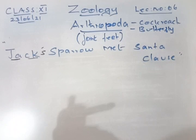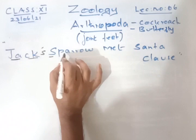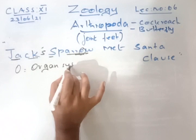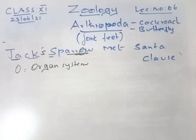Moving to the word Sparrow — O stands for organ system level of organization. So many organs perform one physiological function — that is called organ system level of organization.